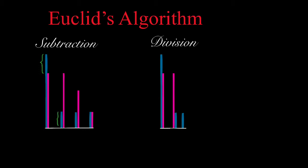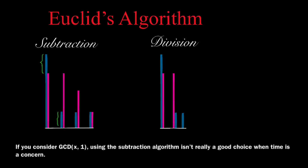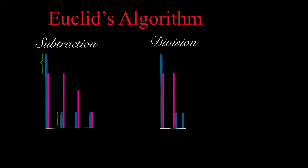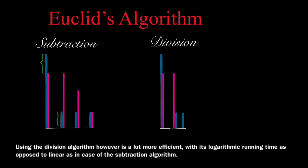In case of Euclidean algorithm by subtraction, the number of steps can be linear. For example, for the GCD calculation of x and 1, you would need to subtract the smaller number 1 from the bigger number x and then from x minus 1 and then from x minus 2, on and on until you are finally left with 1. This example is the worst case possibility.